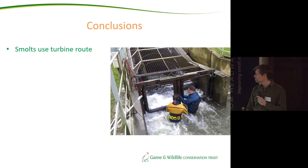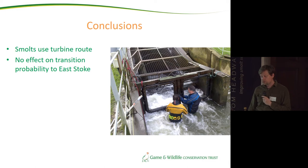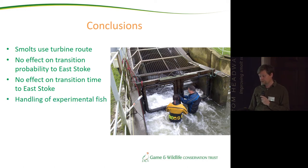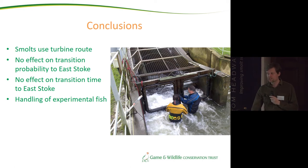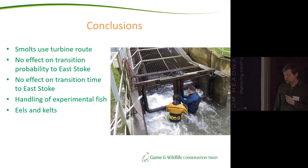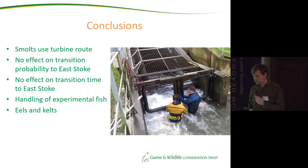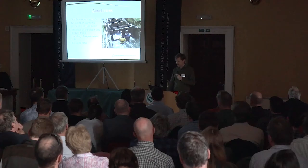To conclude: smolts definitely used the turbine route. There was no effect on the transition probability to East Stoke, and no effect on the transition time to migrate the 3.5 km. The handling experiment reminds us to think carefully about how we handle fish and how that affects behaviour and result interpretation. Today we've only talked about salmon, but other downstream-migrating species such as silver eels and kelts could face this route too, and blade strike risk likely increases with fish length, so they may be at higher risk.